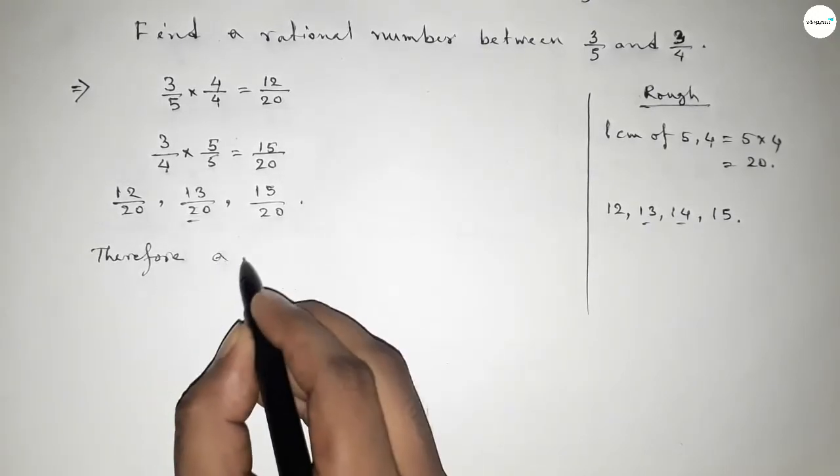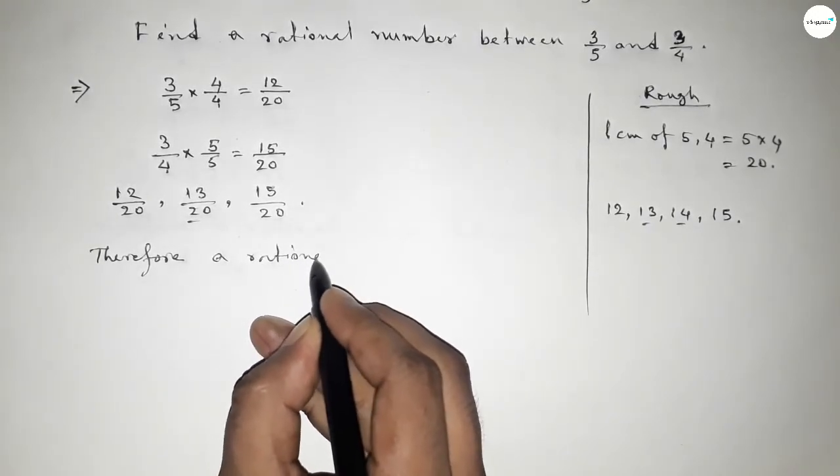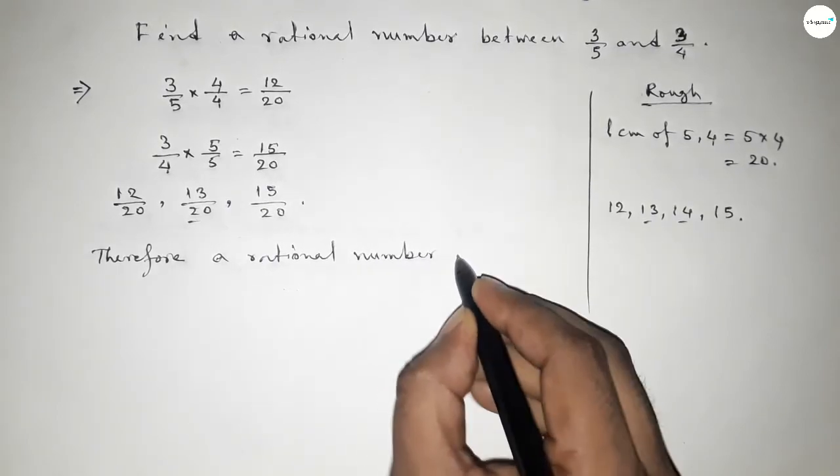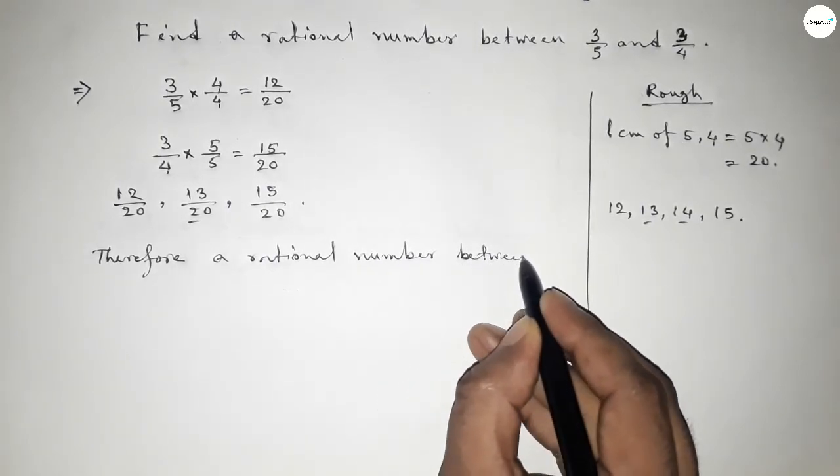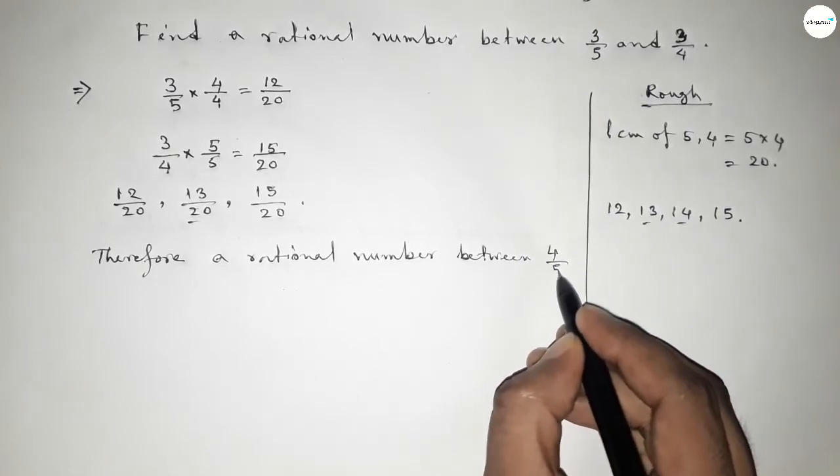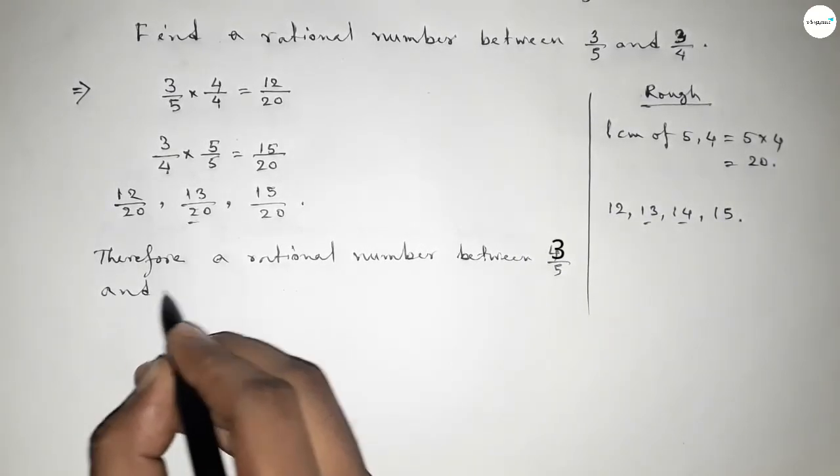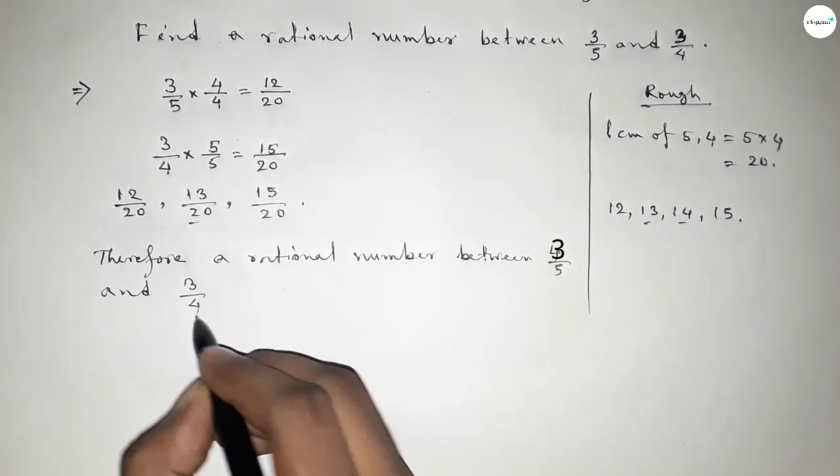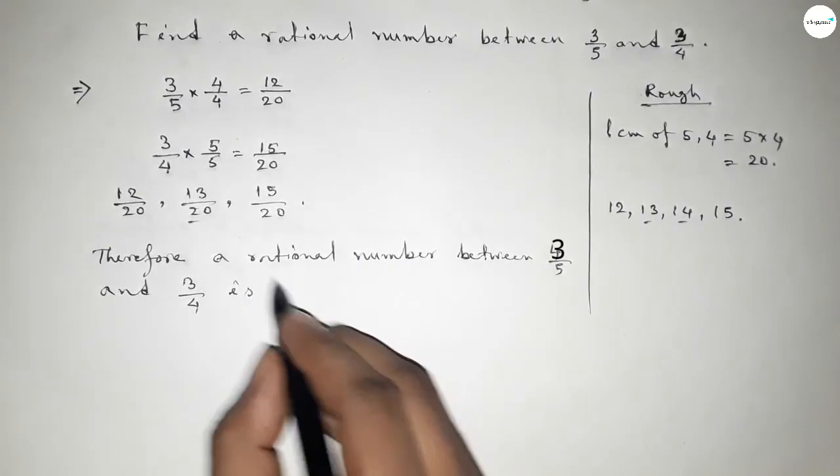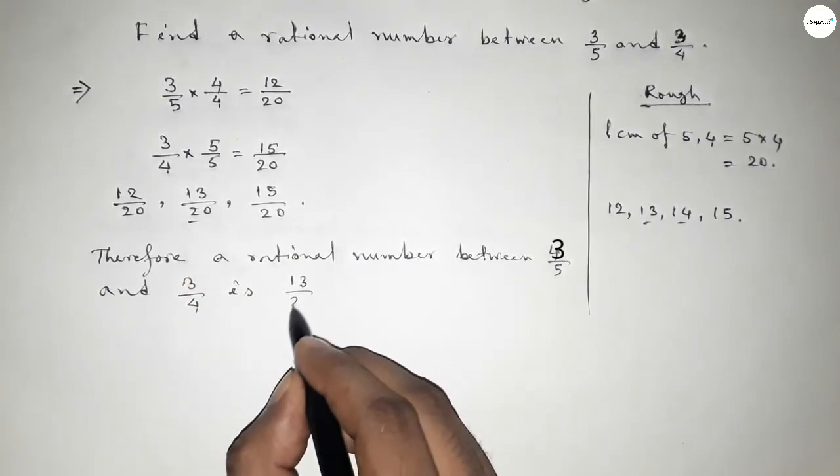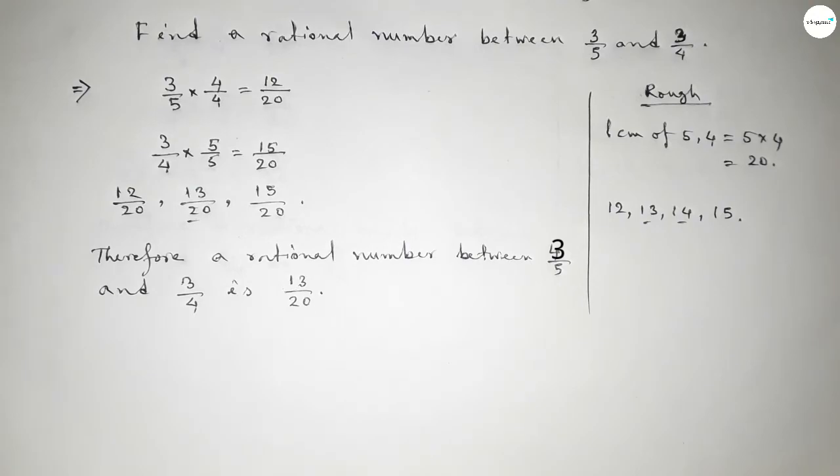So this is the required rational number between 3 over 5 and 3 over 4. Therefore a rational number between 3 over 5 and 3 over 4 is 13 over 20. This is the process to find out a rational number between 3 over 5 and 3 over 4.